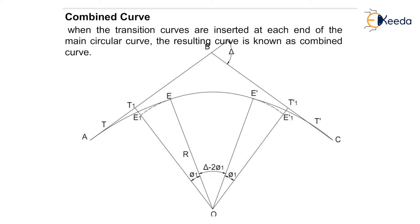Now how to find out the length of combined curve? The angle subtended at the center by the circular arc E E' is equal to the central angle minus two theta one. The length of circular arc E E' can be found by using the formula pi R theta by 180, where this angle is known as theta.